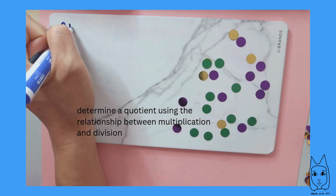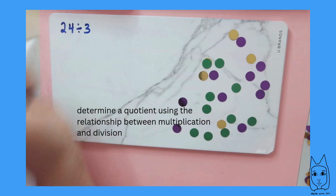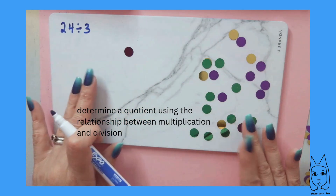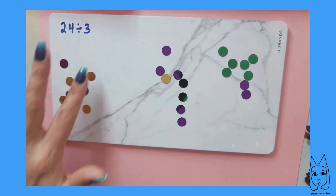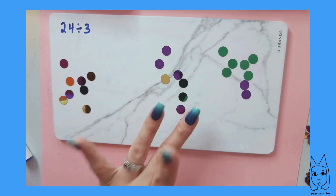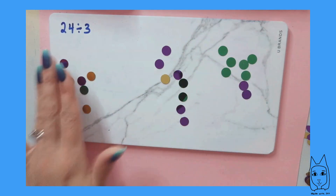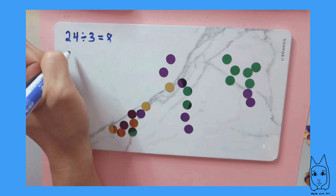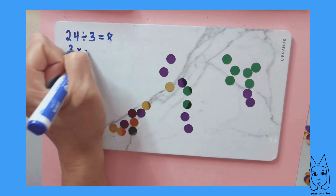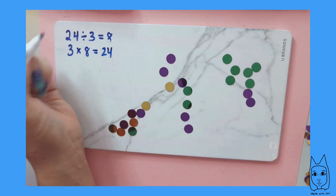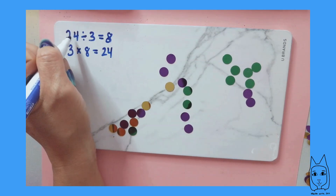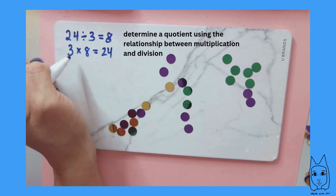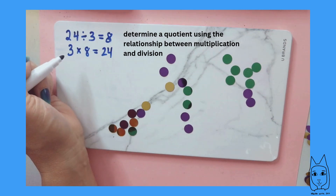I'm going to do 24 divided by 3. I'm going to take these 24 objects and divide them into 3 equal groups — 8 in each group. So 24 divided by 3 is 8. You also know that 3 groups of 8 equal 24. If you're taking 24 and dividing it into 3 groups, you'll have 8 in each group because 3 times 8 equals 24.